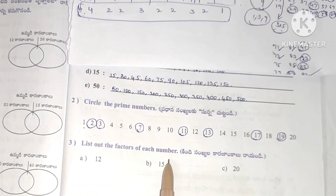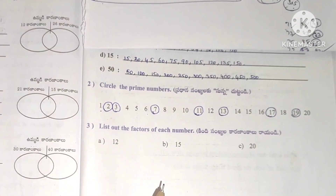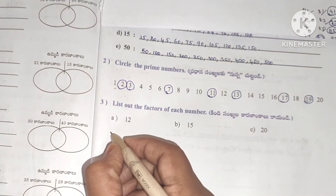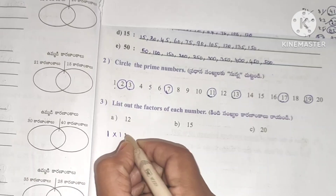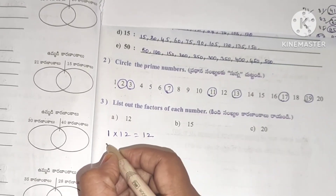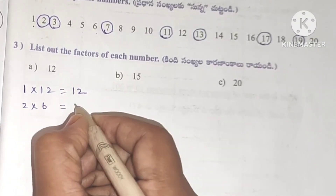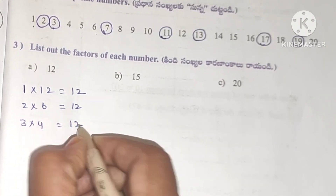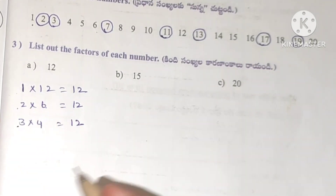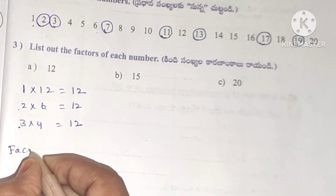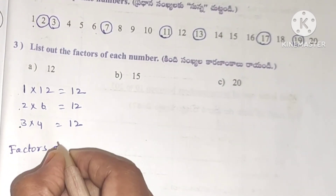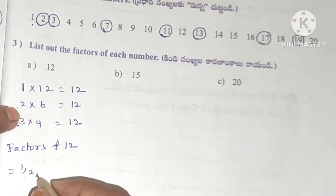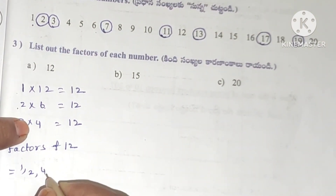Third problem: list out the factors of each number. Factors of 12 — 4×3=12, 2×6=12, 1×12=12. So factors of 12 are: 1, 2, 4, 3, 6, 12.